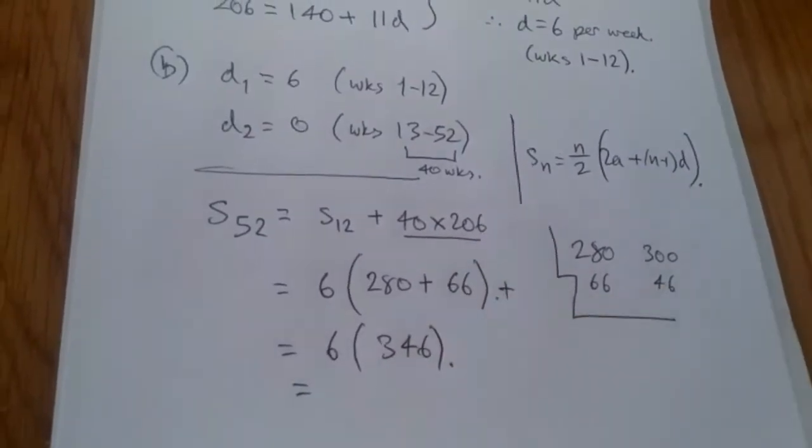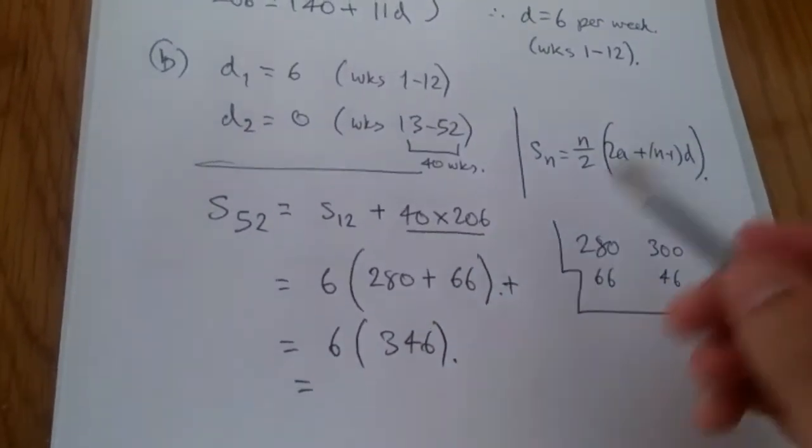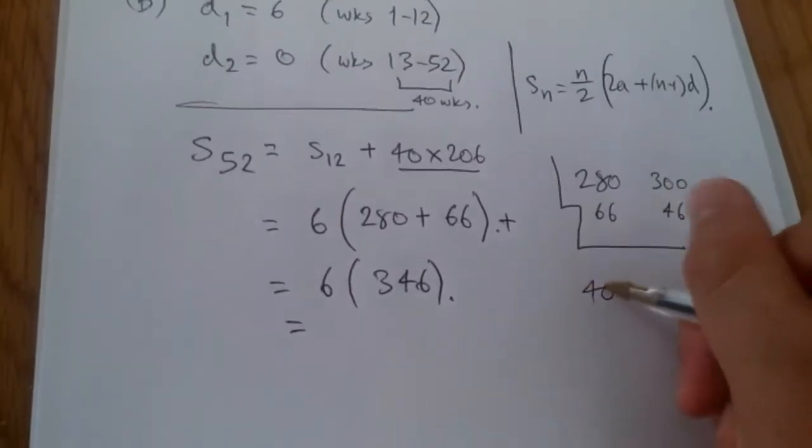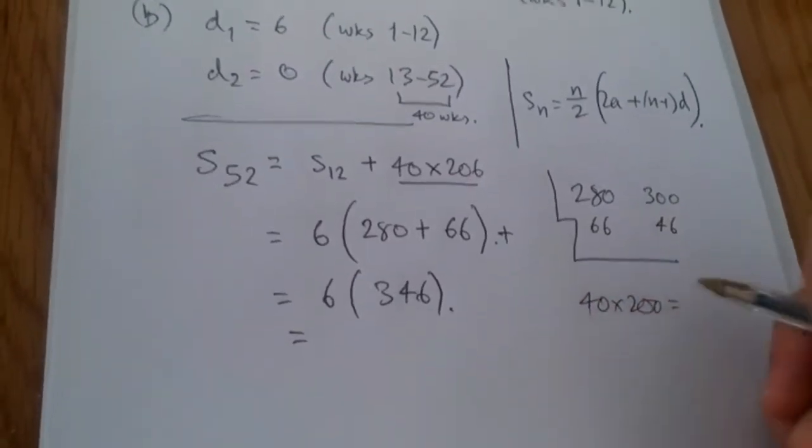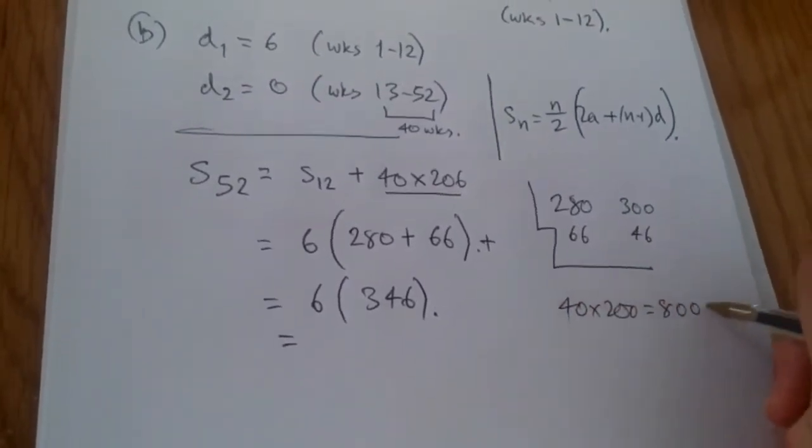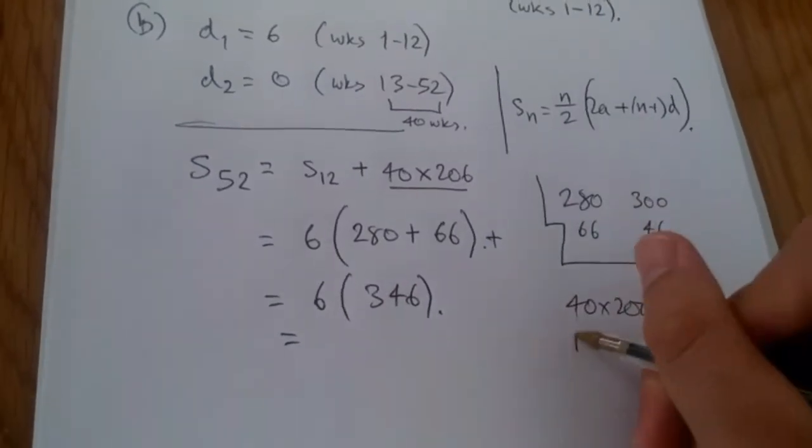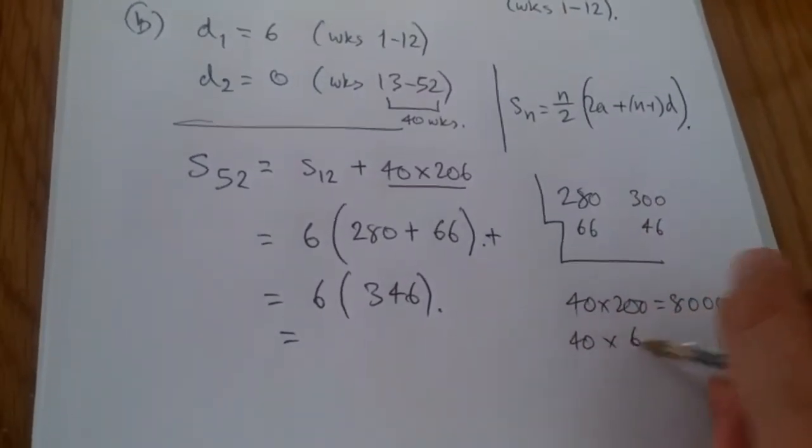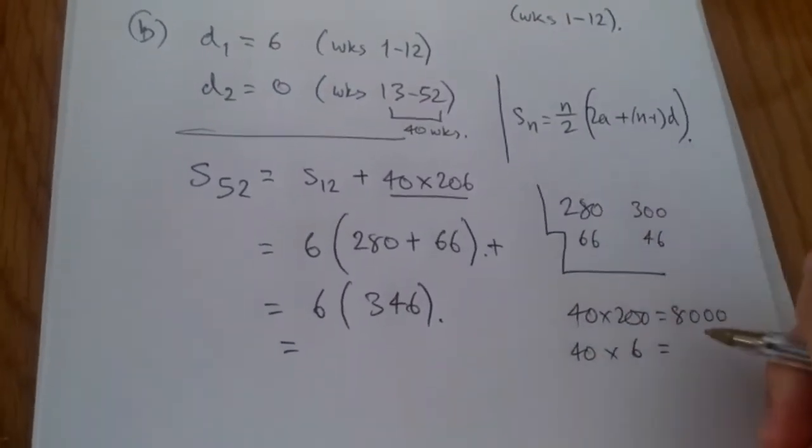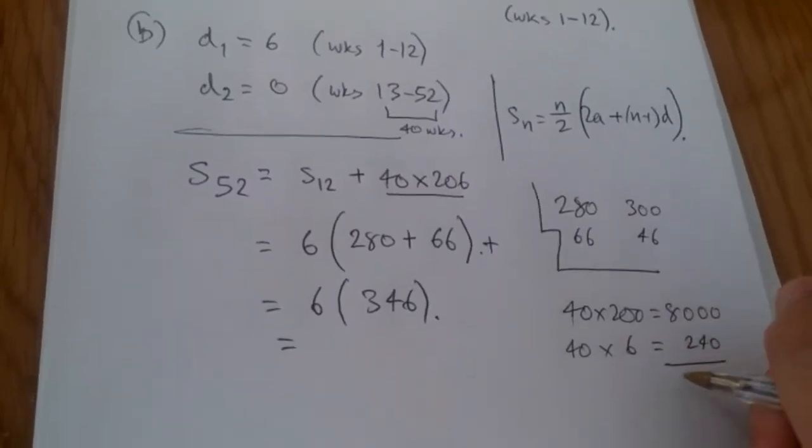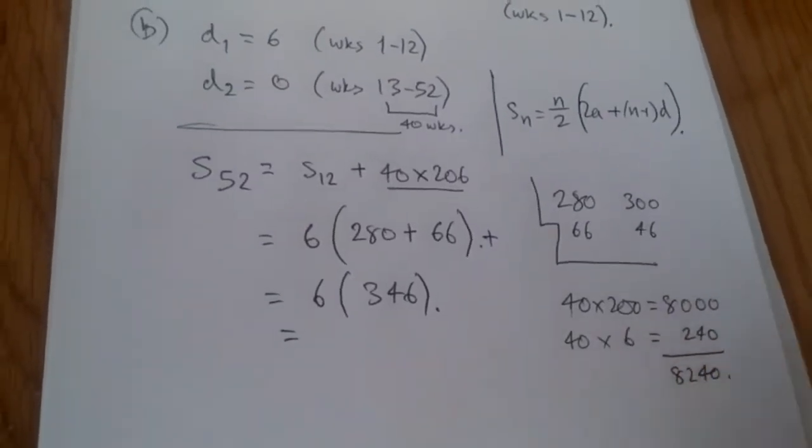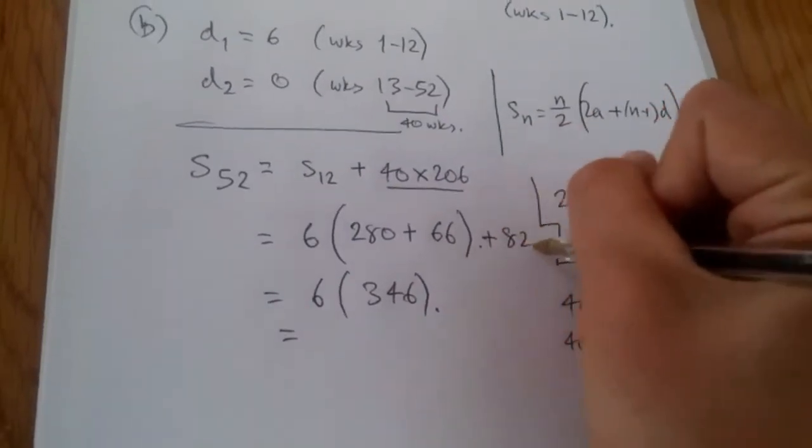40 times 200 plus 40 times 6. So this part is not so bad. 4 times 2 is 8. Lock out two zeros. And then 40 times 6. Again, 4 times 6 is 24. I think it's 0. So we should have 8, 2, 4, 0. Easy mental maths.